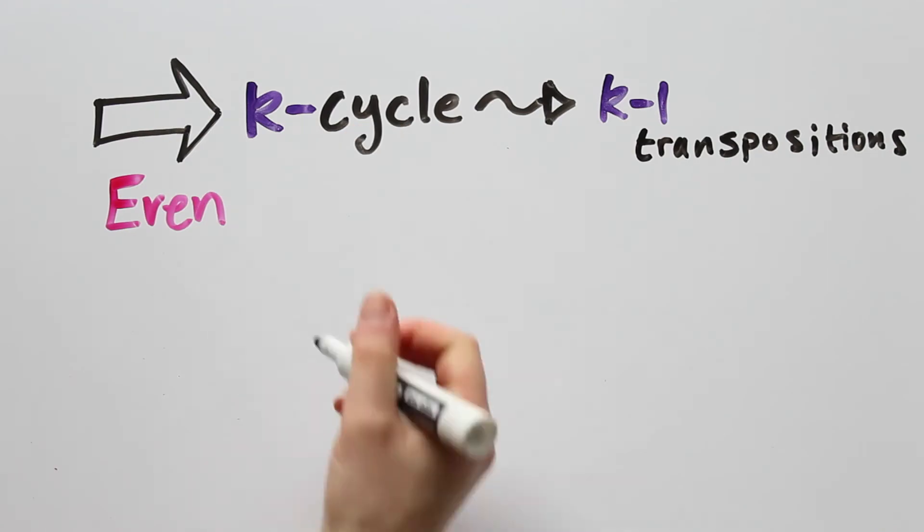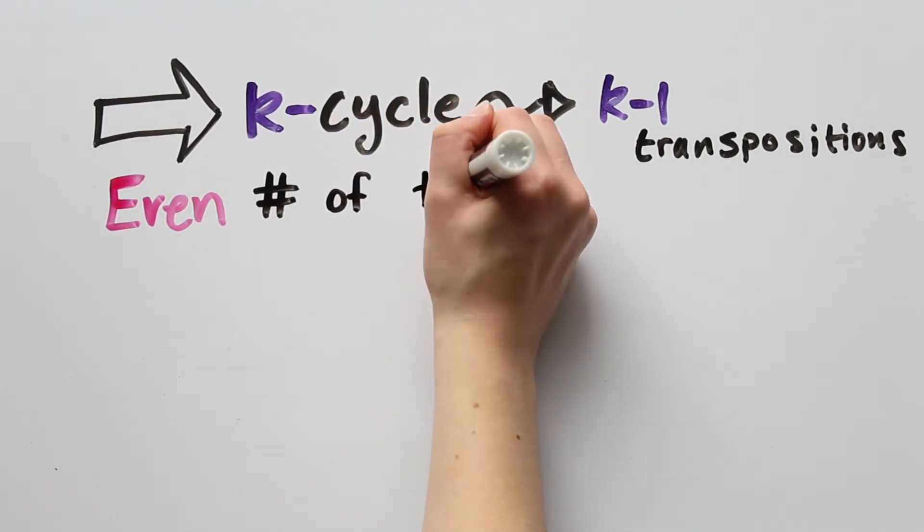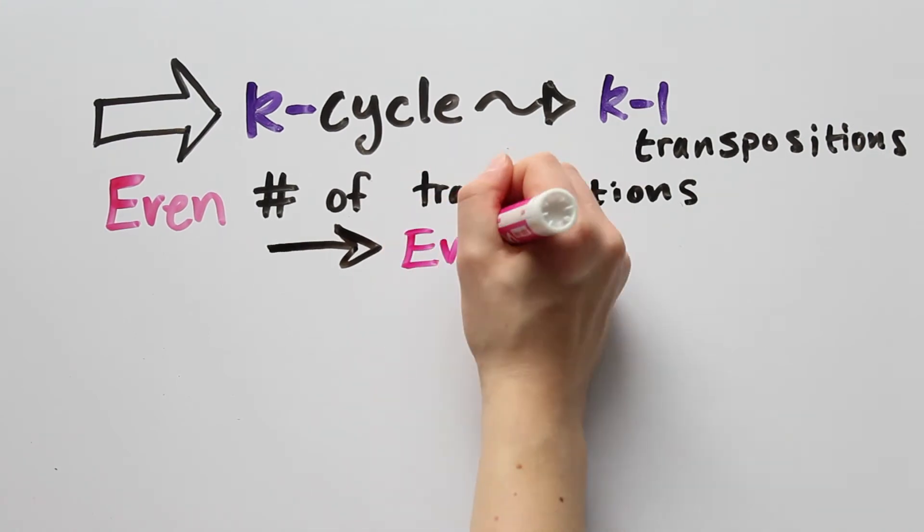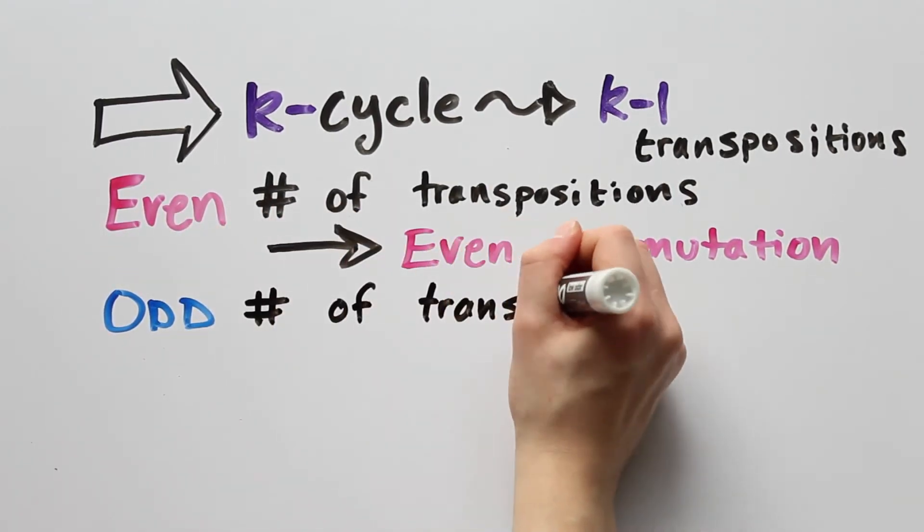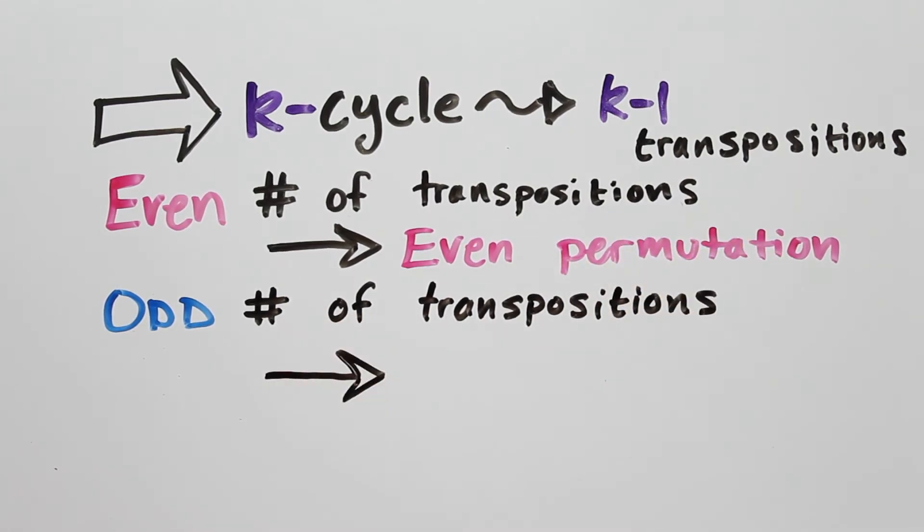If you can write a permutation p as the product of an even number of transpositions, then you can't write it as the product of an odd number of transpositions. We call these permutations even. Similarly, if you can write a permutation p as the product of an odd number of transpositions, then you cannot write it as the product of an even number of transpositions. We call these permutations odd. Since we can decompose a permutation of length k into k minus 1 transpositions, a cycle of odd length is even, and a cycle of even length is odd.